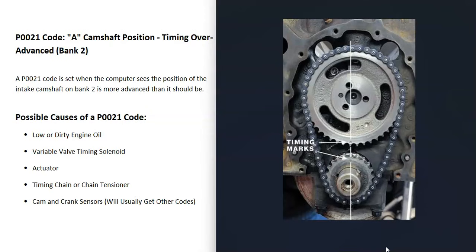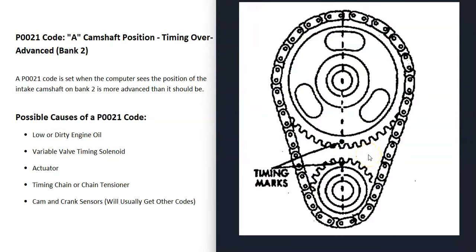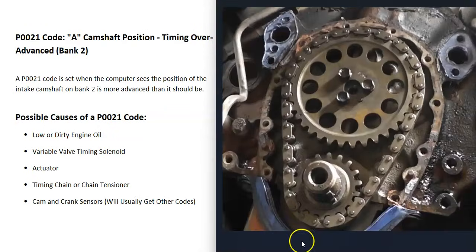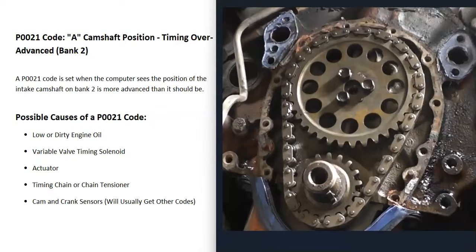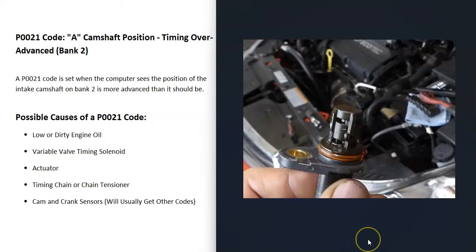The next possible cause is the timing chain or the timing chain tensioner that keeps the timing chain tight. The timing chain needs to have the gears all aligned correctly — there are timing marks that need to be lined up, or it will throw things off. If the timing chain slips a little bit, it can cause issues. Also, if the engine has a lot of miles, the timing chain can become loose and stretched out, which can throw the timing off. If the timing chain has never been changed, that's something to keep in mind.